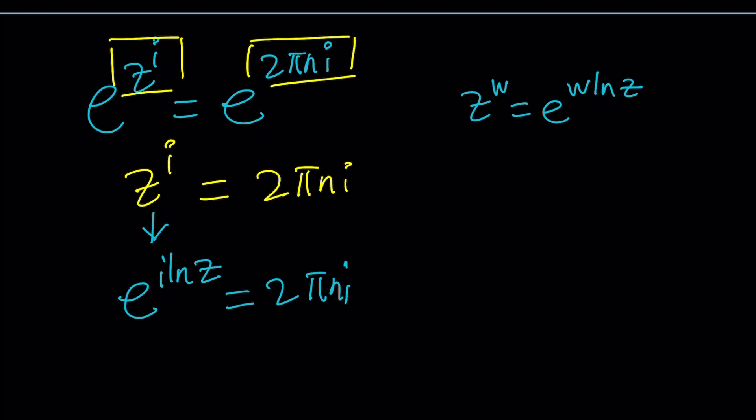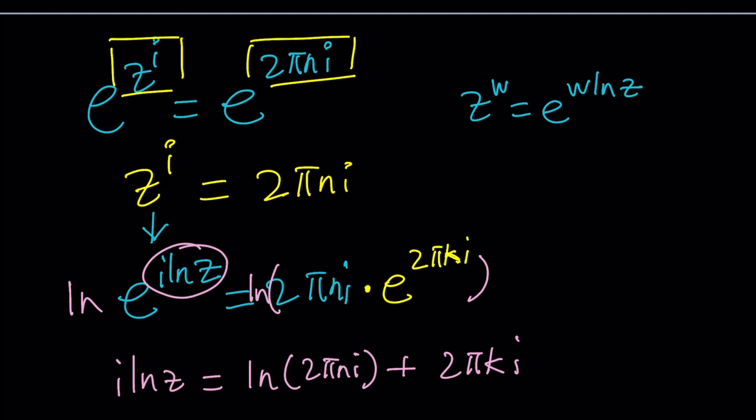Now here's the critical part. I need to be able to write this in polar form. I can multiply this by 1 on the right-hand side, which can be written as e to the power 2 pi k i. Since this is 1, multiplying by 1 is not going to hurt. But when we log both sides with the natural log, we're going to get some results. If you natural log both sides, that's going to give you i ln z equals ln of 2 pi n i plus 2 pi k i. Of course, n and k are integers.